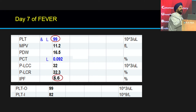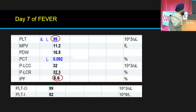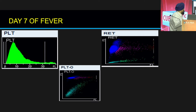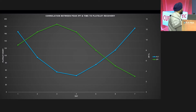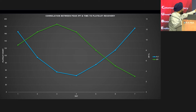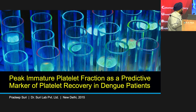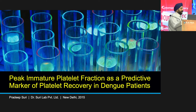This is a useful parameter especially when clinicians are concerned about admissions and transfusions in a resource-constrained setting. The correlation chart shows the green dot as IPF and blue as the platelet count. After peak IPF is attained, platelet recovery usually takes about 48 to 72 hours. This was our first paper, presented at AIIMS in 2015, called 'Peak Immature Platelet Fraction as a Predictive Marker of Platelet Recovery in Dengue Patients.'